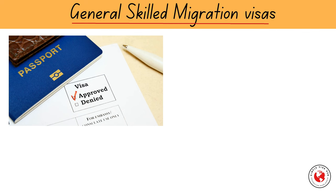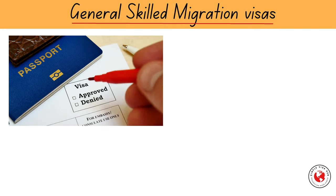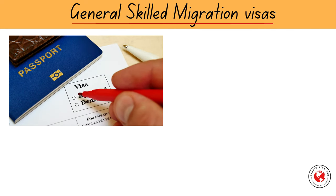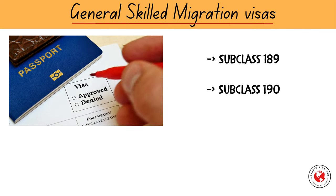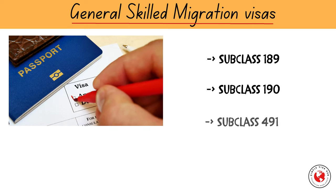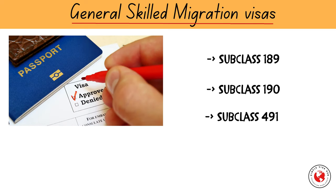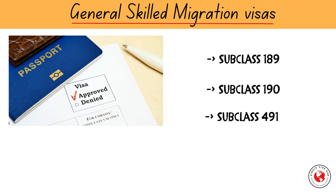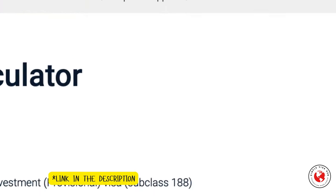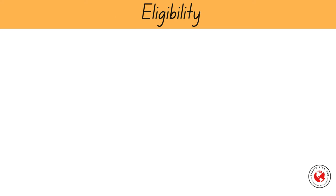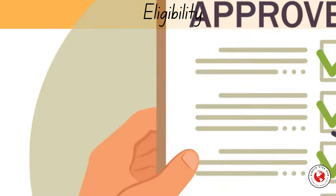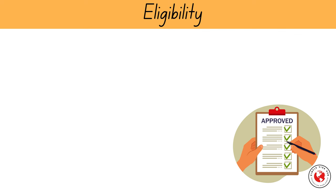There are three primary visas in this system: subclass 189, 190, and 491, and the points-based test is compulsory for these visas. To apply for a General Skilled Migration Visa, you must meet several key requirements.